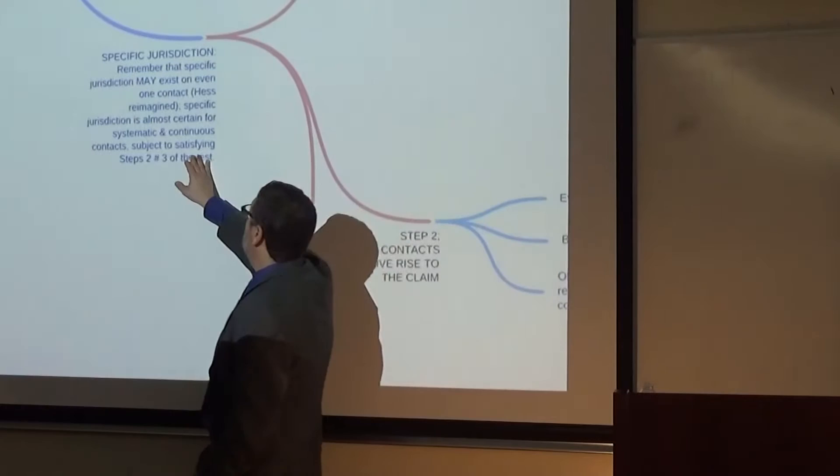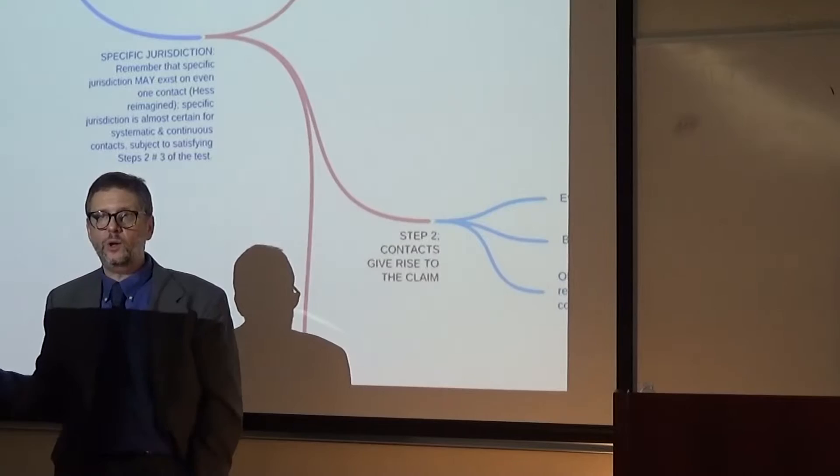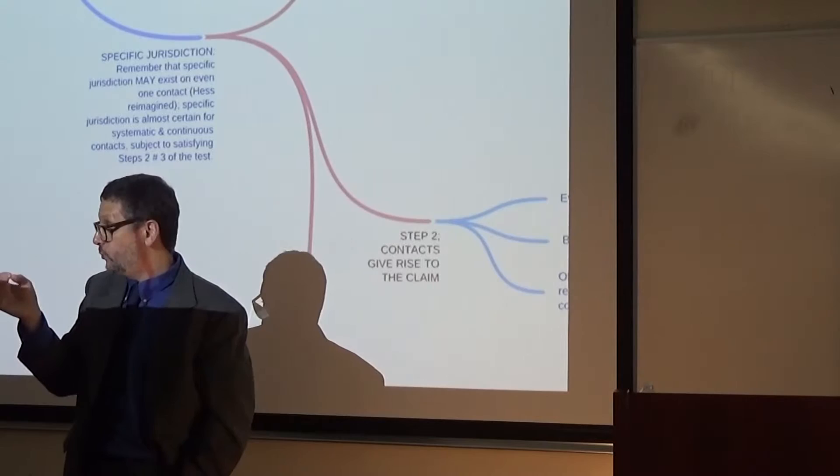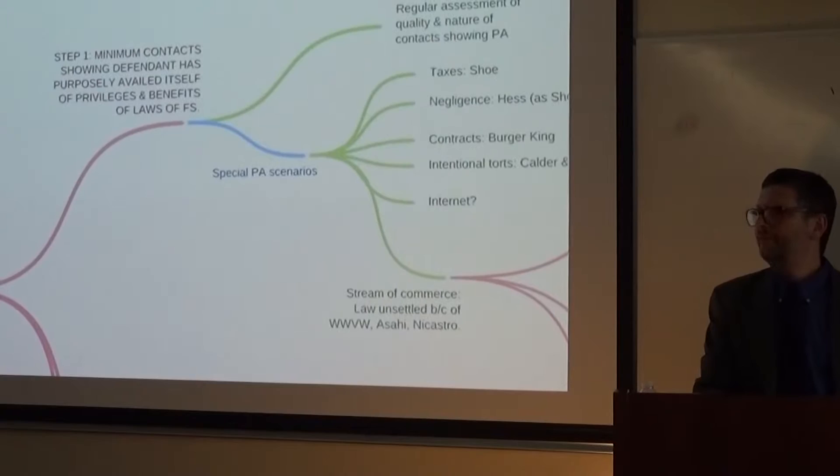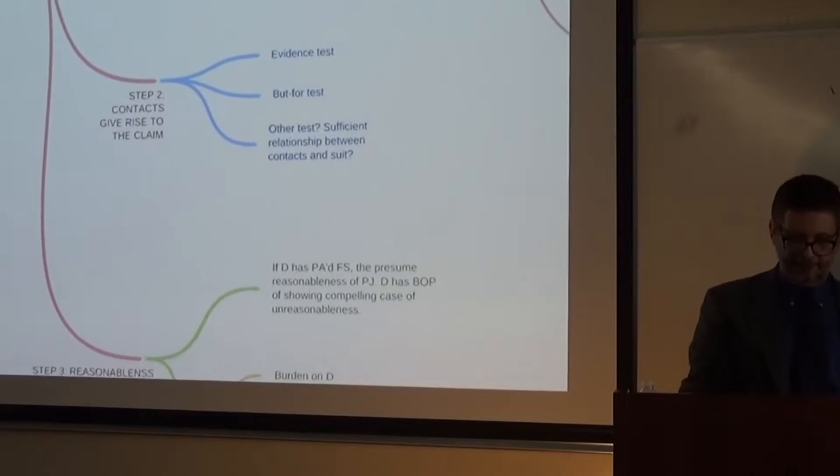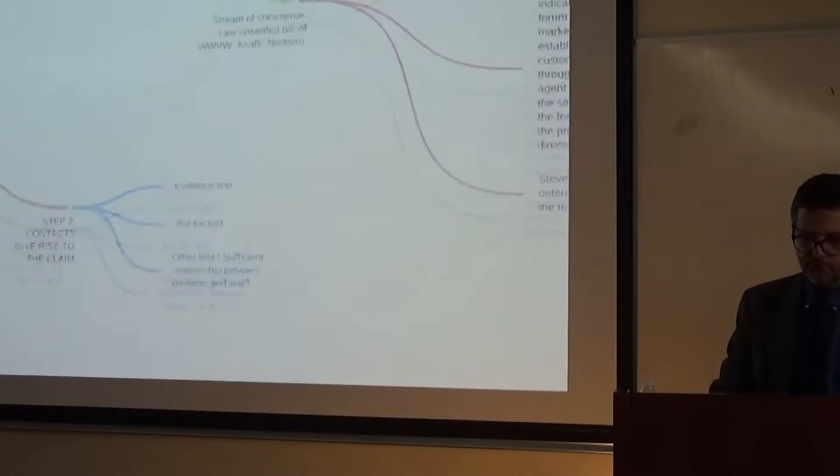Much easier to satisfy is specific jurisdiction. Specific jurisdiction can arise with lots of contacts or even with just one contact. What you need to know is whether or not the defendant's contacts gave rise to the claim. And the exercise of jurisdiction would be reasonable. So it's a three part analysis. Part one is the defendant has purposefully availed itself of the benefits and protection of the state's laws. Second, the contacts gave rise to the claim. Third, it would be reasonable to exercise jurisdiction. Let's go through each of them briefly.